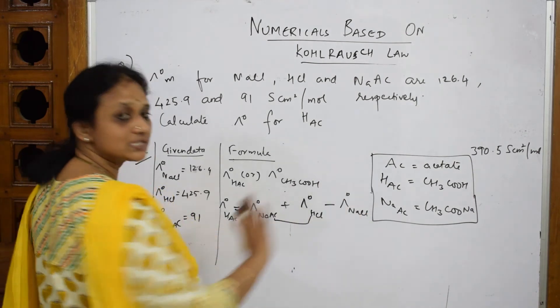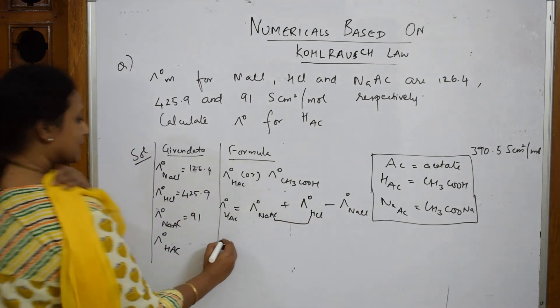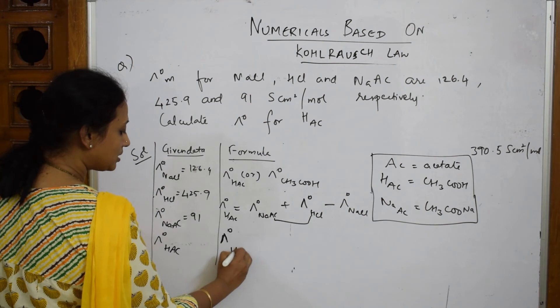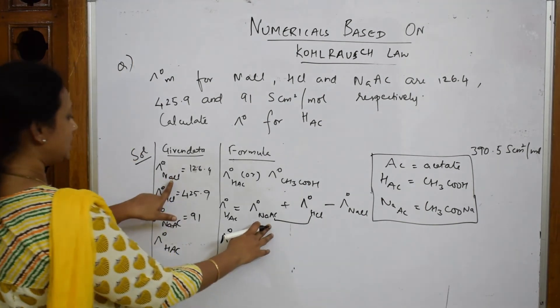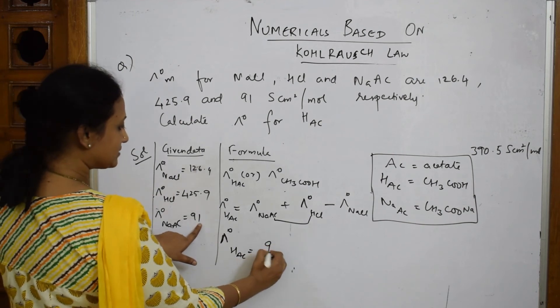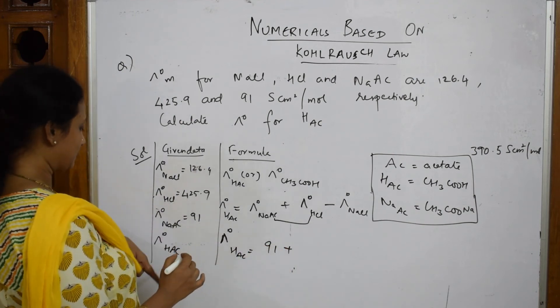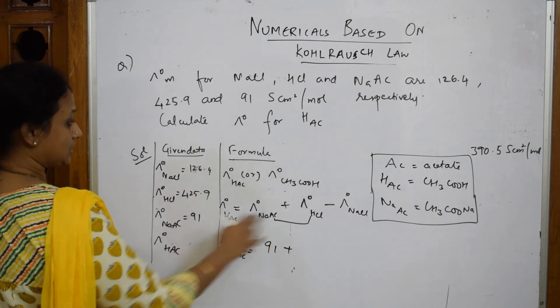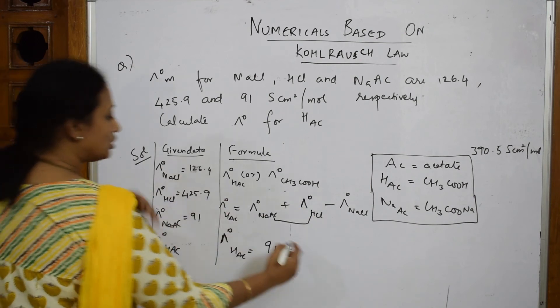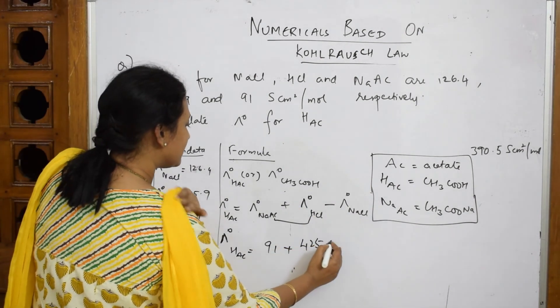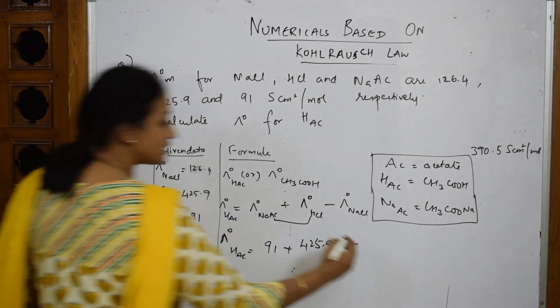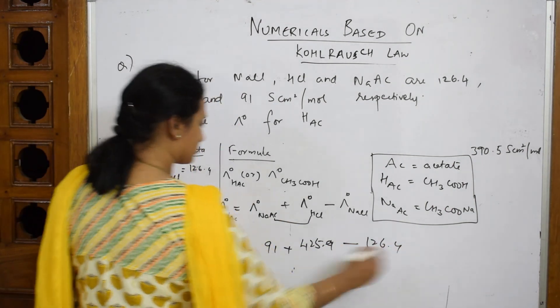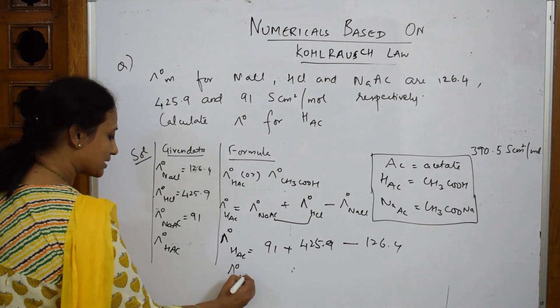Come back and add everything. Lambda not HAC equals lambda not NaAc - how much is given to me? Lambda not NaAc is 91. Lambda not H⁺, no, HCl - how much is given to me? 425.9 minus lambda not NaCl is given to me as 126.4. So when I add and subtract, when I find out the answer, I get an answer of 390.5 siemens centimeter square per mole.